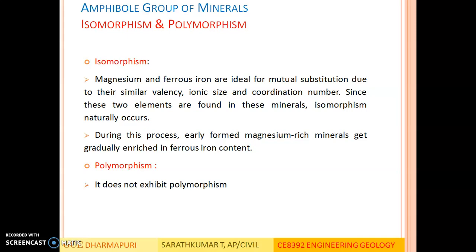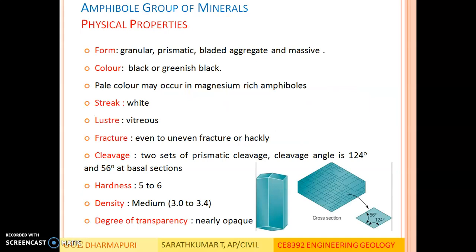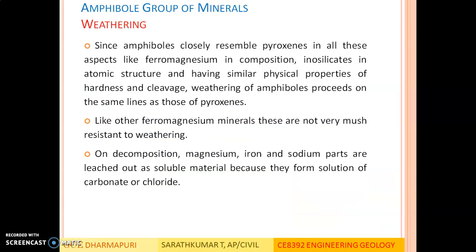Amphibole group of minerals does not exhibit any polymorphism. For physical properties, the distinctive property is cleavage — two sets of prismatic cleavage are present, with cleavage angles of 124 degrees and 56 degrees at basal sections. Other physical properties remain very similar to pyroxene group of minerals. Now we will see weathering of amphibole group of minerals.